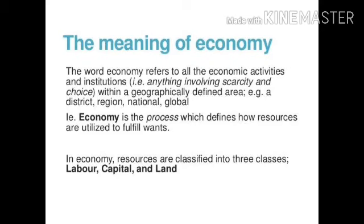There is one more resource — entrepreneur. So there are four factors: land, labor, capital, and entrepreneur. People perform different activities to earn their living. Teachers go to school, doctors go to the hospital, farmers go to their fields, industrialists go to their industries. The nature and level of economic activities differ from occupation to occupation, profession to profession, area to area. Whatever activities are performed by different people in different areas to earn their living, that system is known as economy.